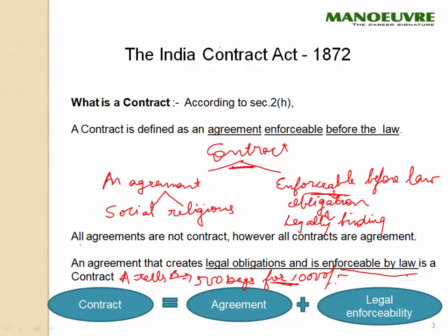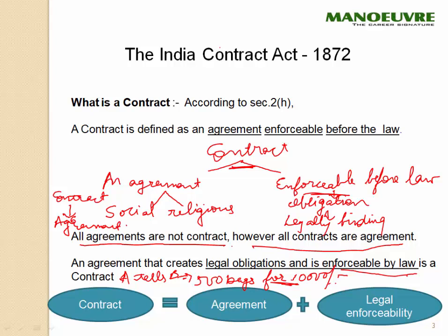It is a very interesting statement that all agreements are not contracts; however, all contracts are not agreements either. For a contract to exist, there has to be an agreement first. We can say that agreement is the mother and contract is the child — first there has to be a mother, then only there will be a child. So all agreements necessarily cannot be contracts, and there cannot be any contract without an agreement.